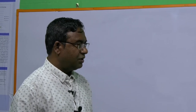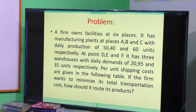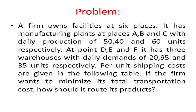Now let us discuss one problem and apply the UV method. A farm owns facilities at six places. It has manufacturing plants at places A, B, and C with daily production of 50, 40, and 60 units respectively. At points D, E, and F it has three warehouses with daily demands of 20, 95, and 35 units respectively. Per unit shipping costs are given in the following table. The farm wants to minimize its total transportation cost.